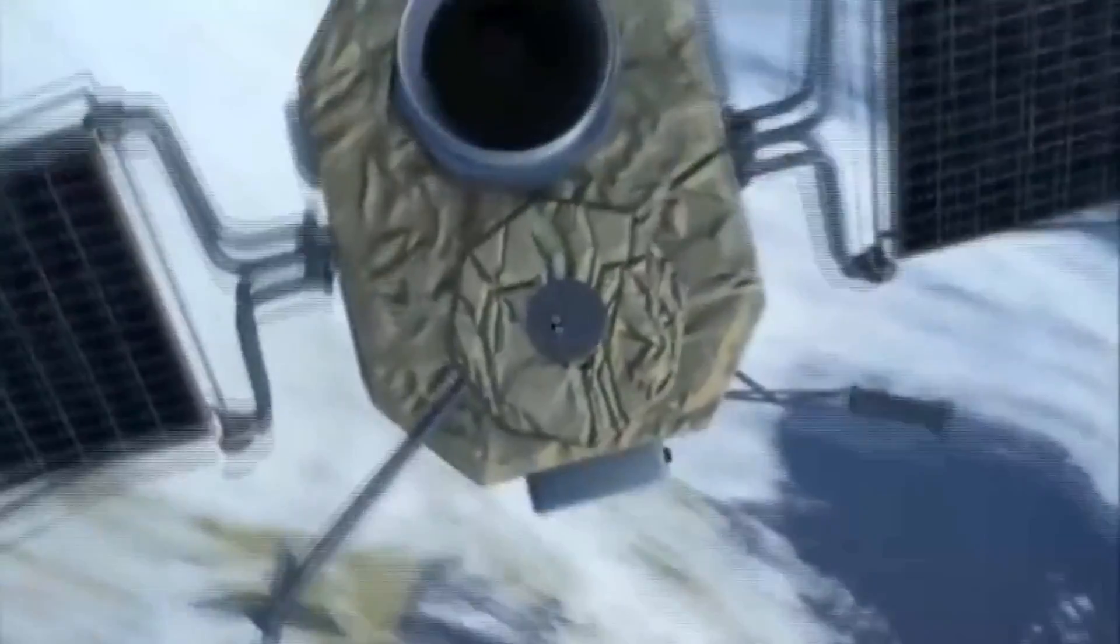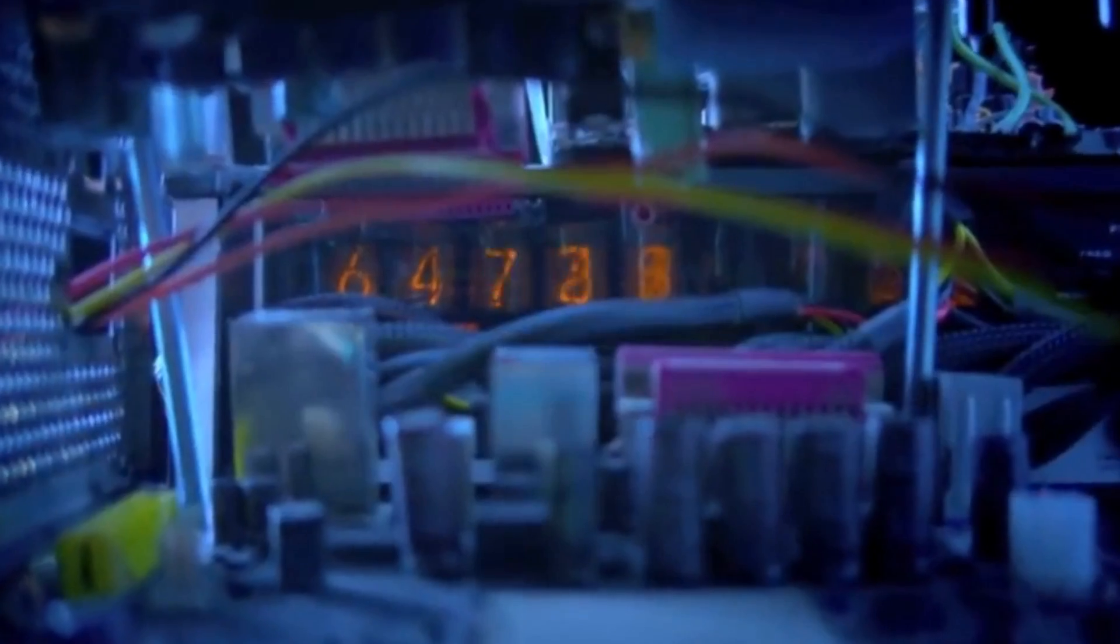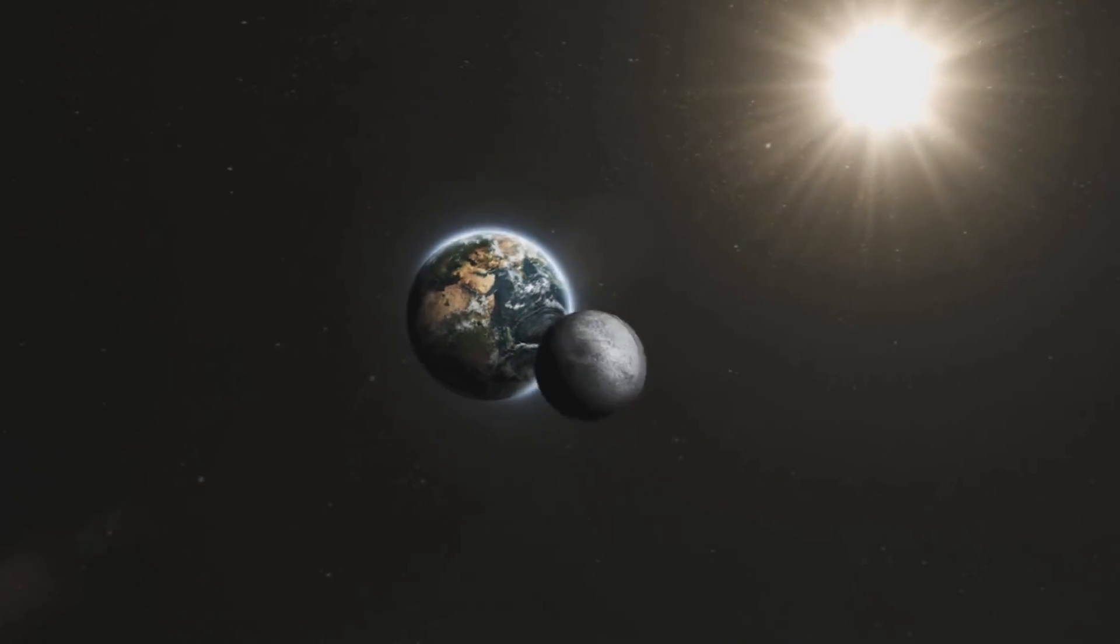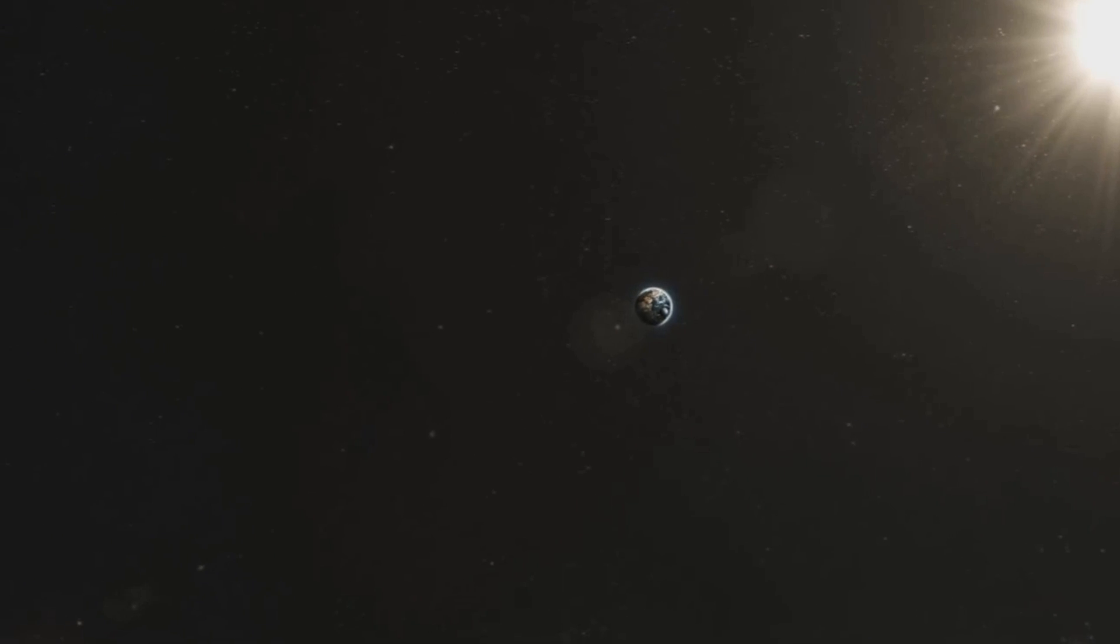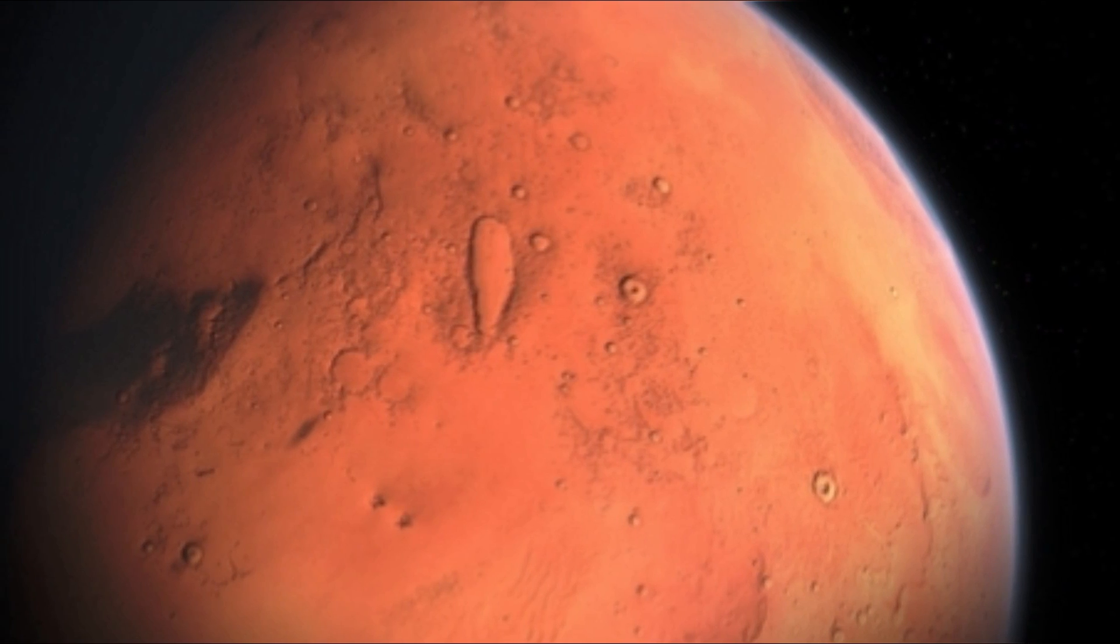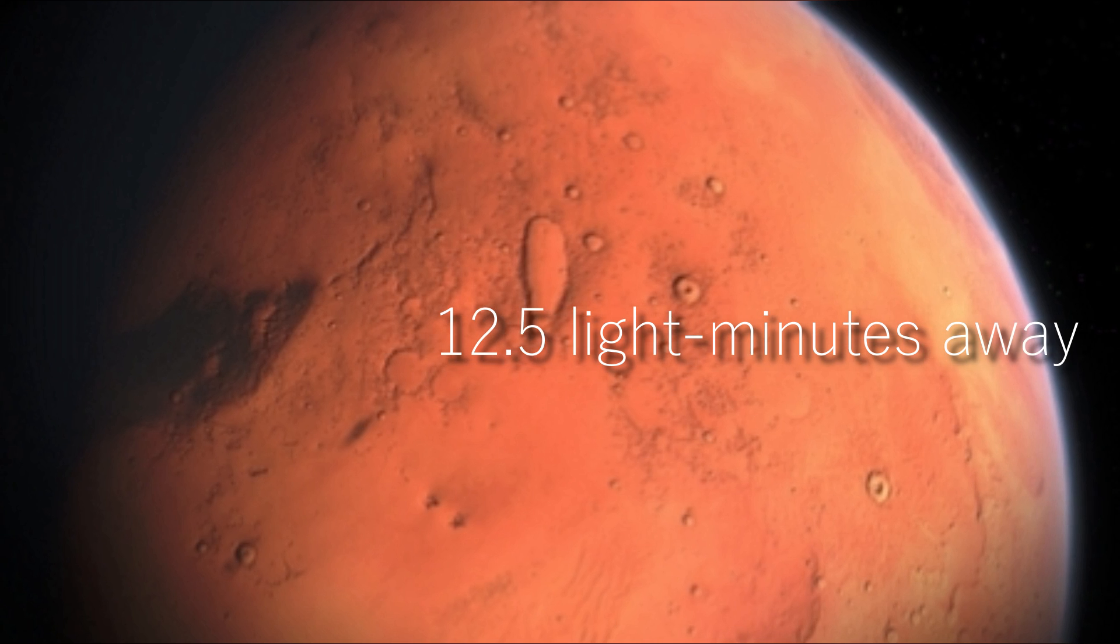The time that it takes us to travel one light year is considerably longer than a year. In fact, it takes between 6 months and a year just to reach Mars, which is only 12.5 light minutes away.